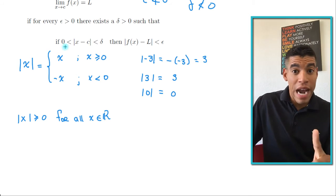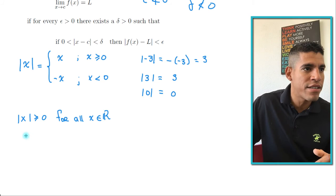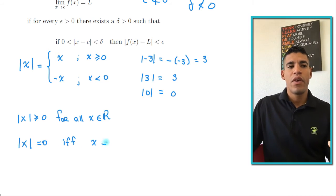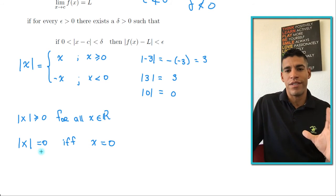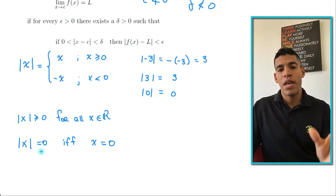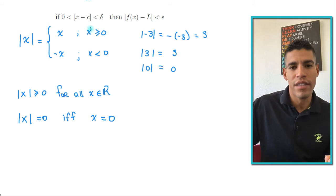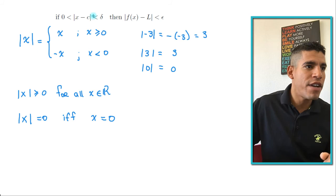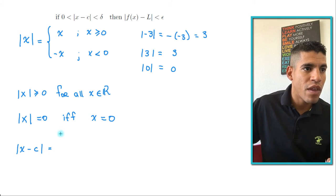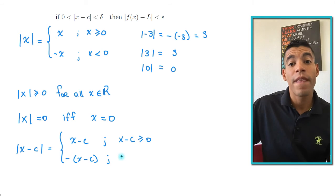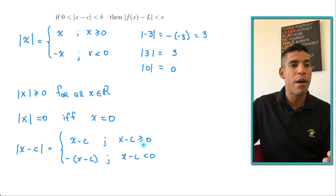Another important property: |x| = 0 if and only if x = 0. Now let's look at |x − c|. By the piecewise definition, |x − c| equals x − c when x − c ≥ 0, and equals −(x − c) when x − c < 0. We can manipulate the inequality: x − c ≥ 0 is equivalent to x ≥ c, and if x equals c we get the top case.